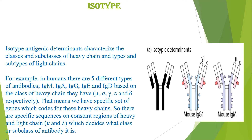This is the isotypic determinant. We have five different types of antibodies: immunoglobulin IgM, IgA, IgG, IgE, and IgD. Based on the class of heavy chain, they have alpha, mu, gamma, epsilon, and delta respectively. In the antibody structure, the outer side is the light chain and the inner side is the heavy chain. Any change in the heavy chain leads to differences in the immunoglobulin.